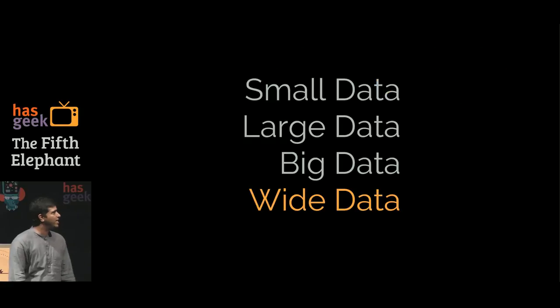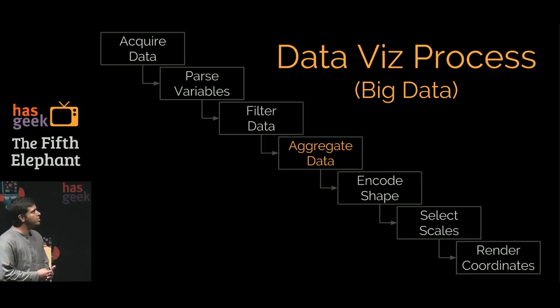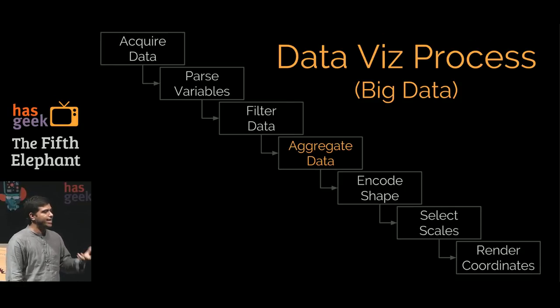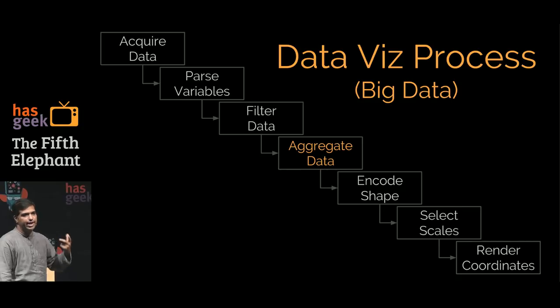Let's look at the data process for big data. You acquire the data, parse the variable, filter the data, but you aggregate data. You aggregate data and then encode shapes, select scales, and render coordinates. Some of the work we saw, for example the Apache Lens that was being talked about yesterday, is trying to do this aggregation in a smarter way so that we can actually still work through this data pipeline.